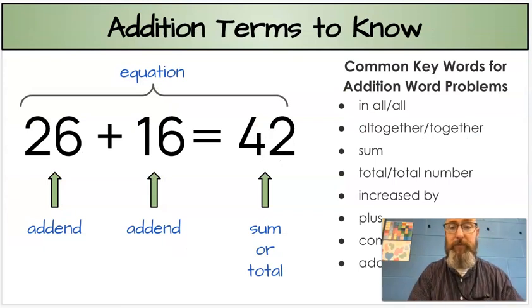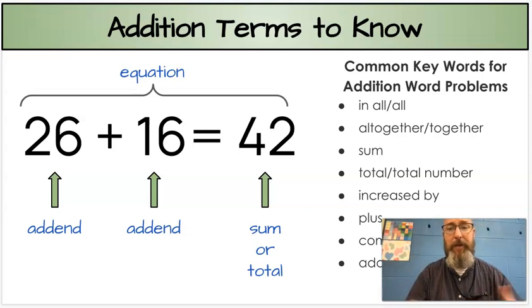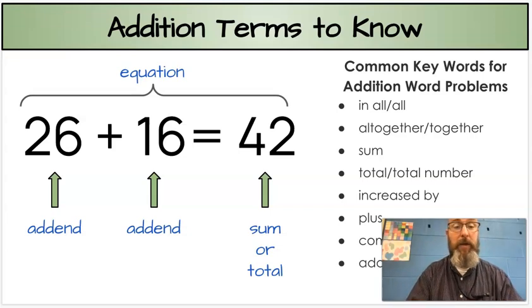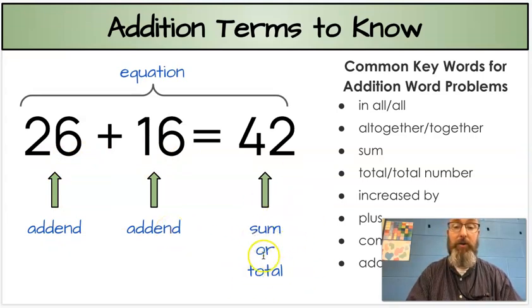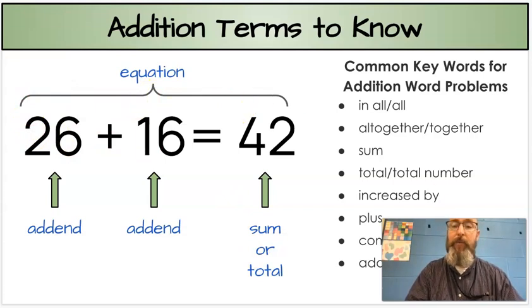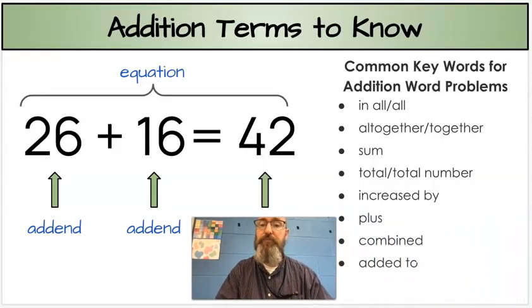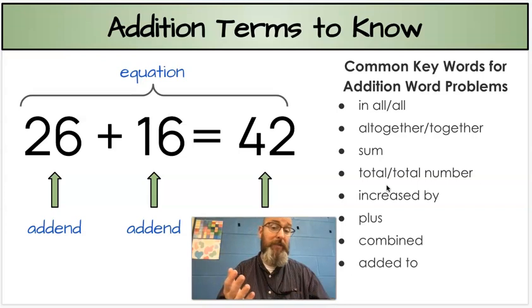Because we're doing word problems, there are some addition and subtraction terms I want to review. We go over these every time, but I just want to make sure you know them. If we're doing an addition problem, we're going to have two different numbers we're adding, and both of them are called addends. The answer to an addition problem is usually called a sum — sometimes we'll see it called a total. And the whole problem is called an equation. When we're doing word problems, we look for keywords, and those keywords are clues — they're telling us, do I add, do I subtract?